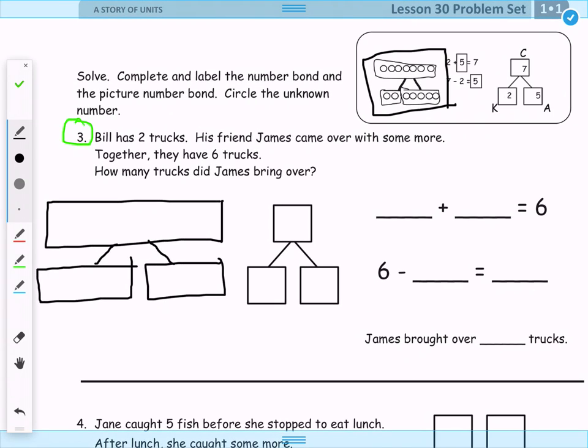Now, it says that Bill has two trucks. His friend James came over with some more. Together, they have six trucks. So, once again, we see that our whole is going to be here because it said together. So we know that that's going to be our biggest number. Therefore, that is our whole.